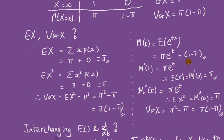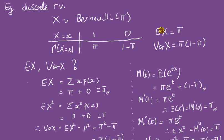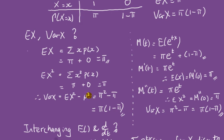Now the expected value of x is the first moment, and the variance of x equals the second moment minus the first moment squared — so we're using moment terminology. To get the first moment, differentiate the MGF with respect to t once; that gives this expression, then set t to 0: pi times e to the 0 equals pi. For the variance we need the second moment, so differentiate again with respect to t — it remains the same thing — then set t to 0, which again gives pi, and hence the result.